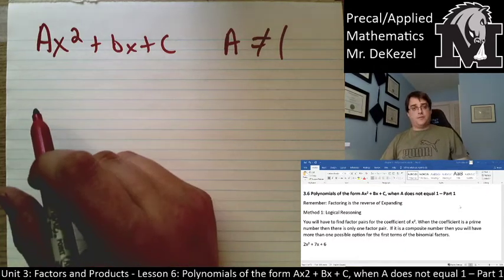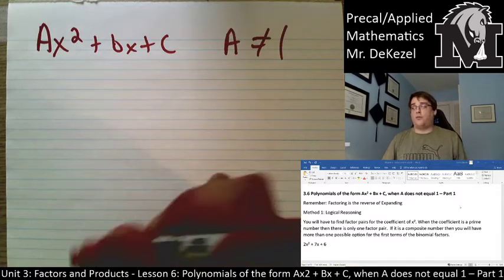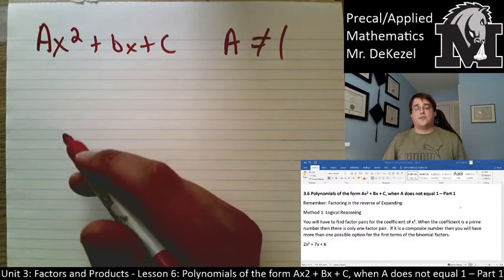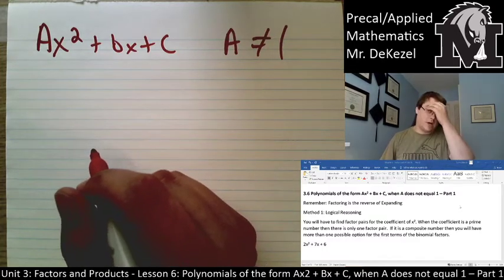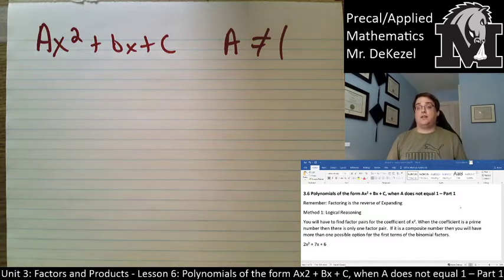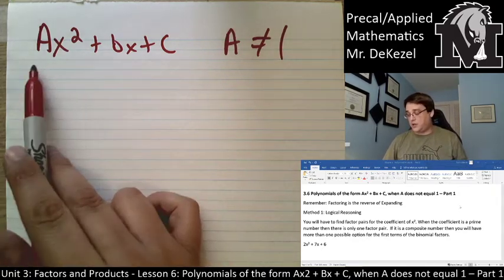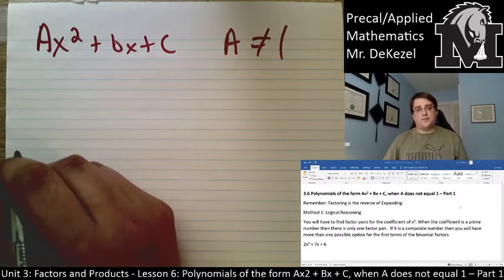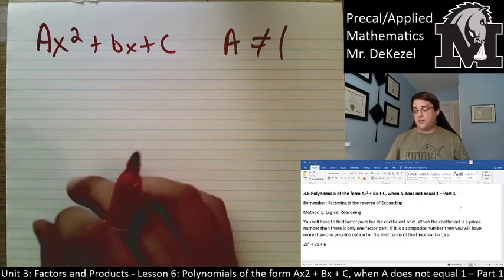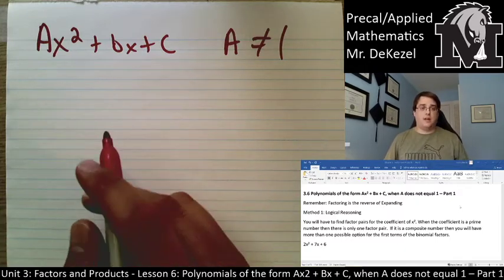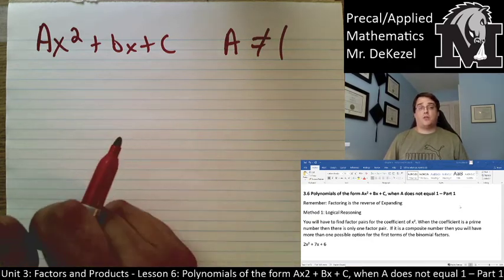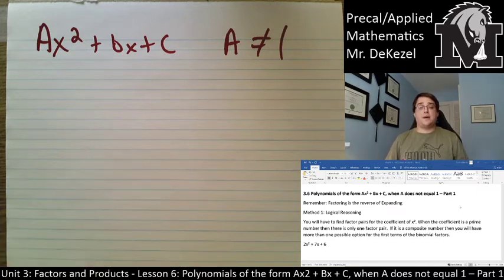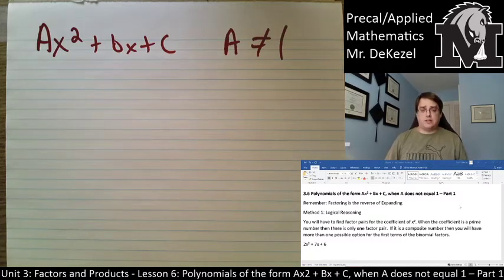It is never going to be 1. It might be 2, 3, 4, but it's not going to be 1. There are two ways that we can factor these. The first one is called logical reasoning — that's important so you know what I'm talking about when I say it. Method 1 is logical reasoning. We're going to find factor pairs for this coefficient, and it's really easy when a is a prime number. If a is 2, 3, or 5, there's only one set of factors. But if you get a number like 4 or 6, there are extra steps because there are more than one factor pair.